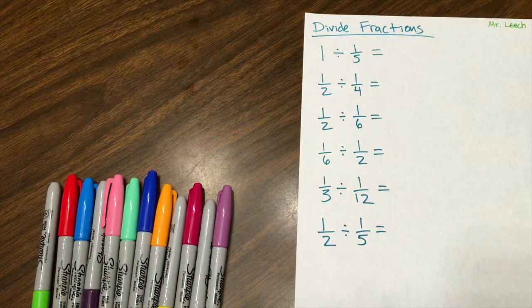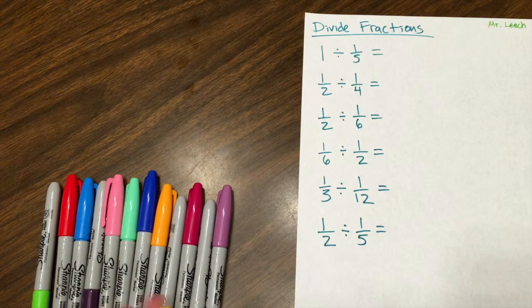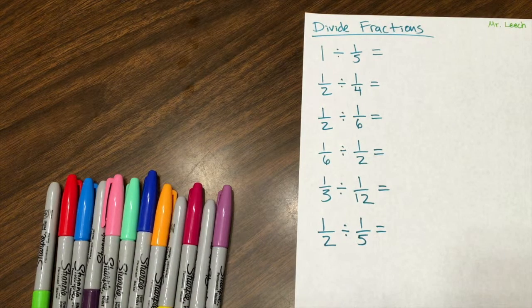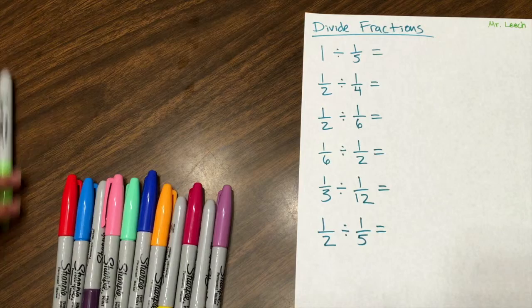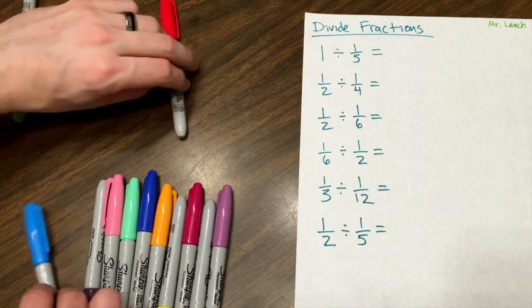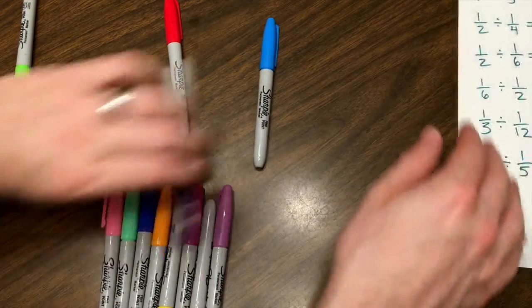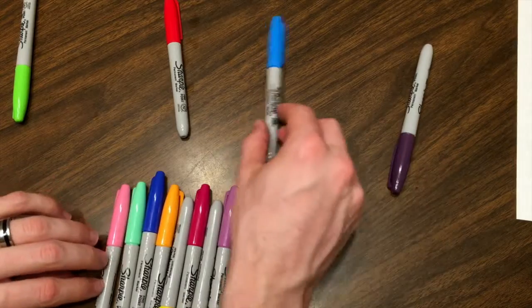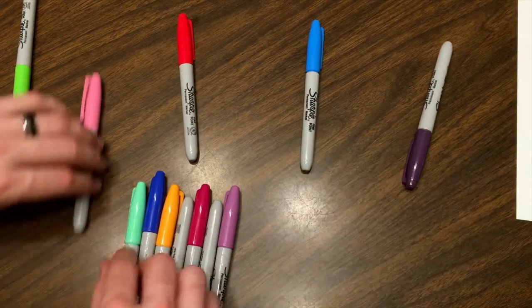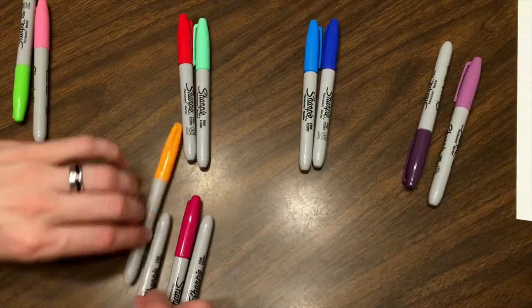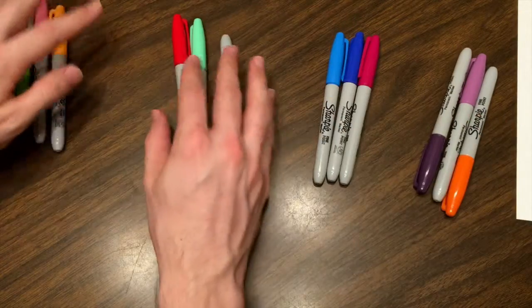Before we start dividing fractions, let's just divide these 12 sharpies into four equal groups. One way to do that is just to start forming your four groups. There's my four groups, now let's fill them in with the rest of them. There you have it.